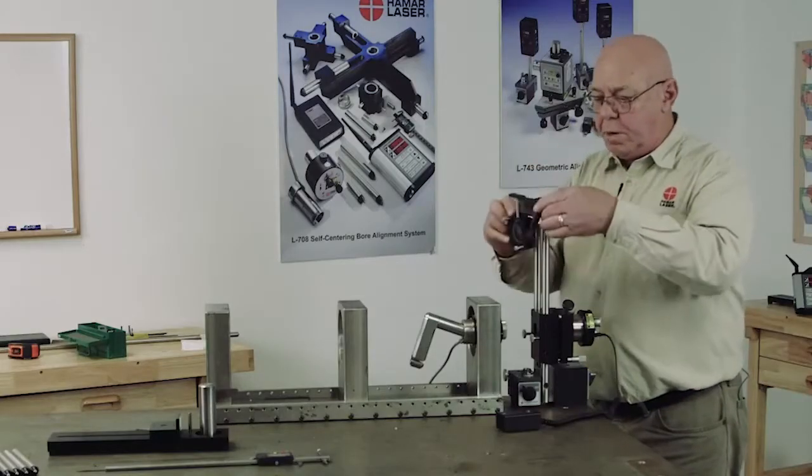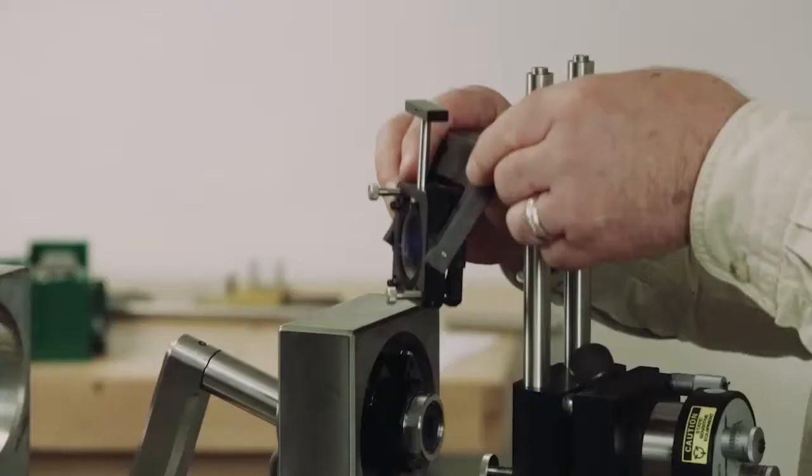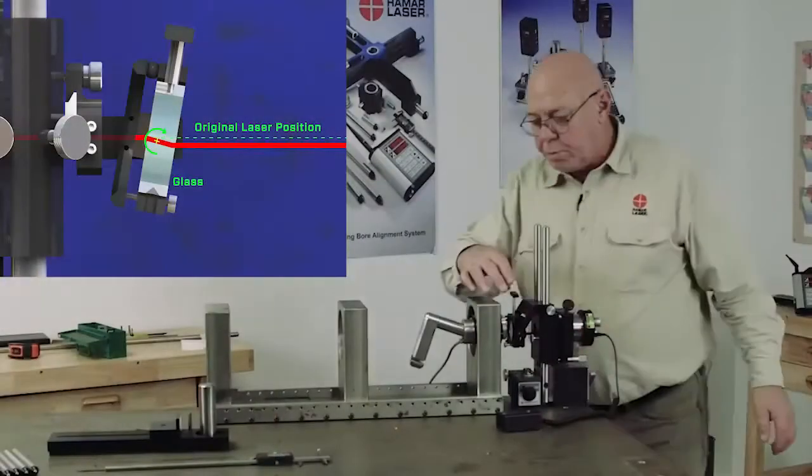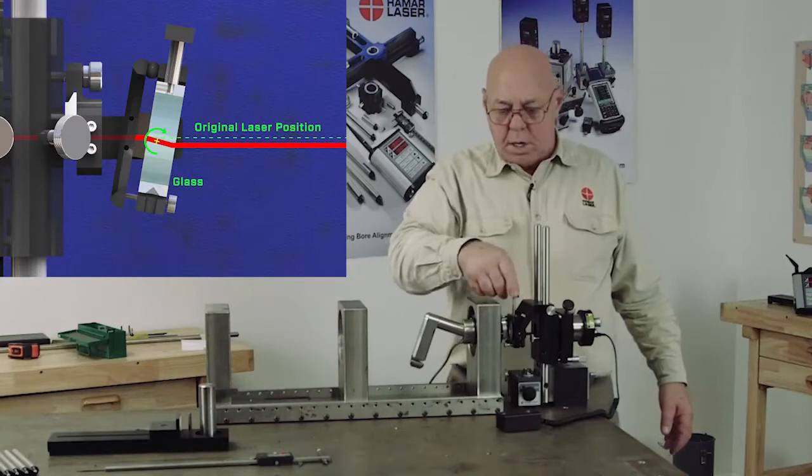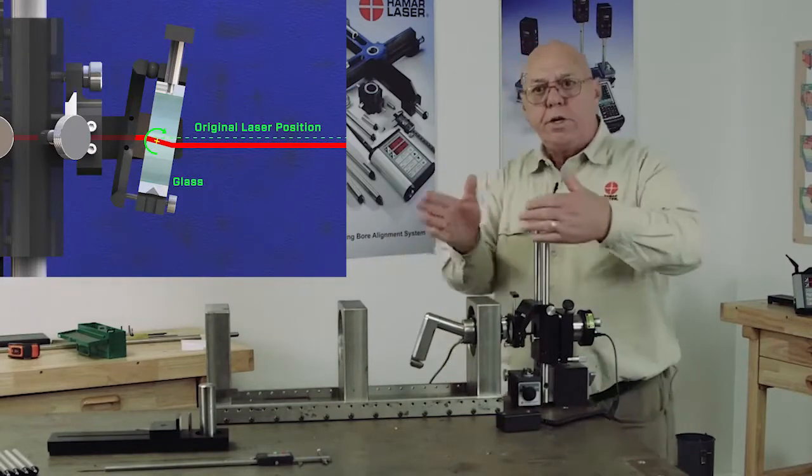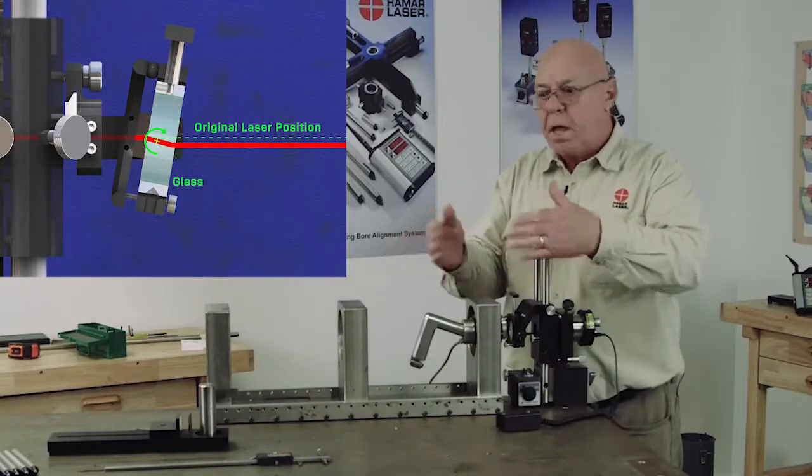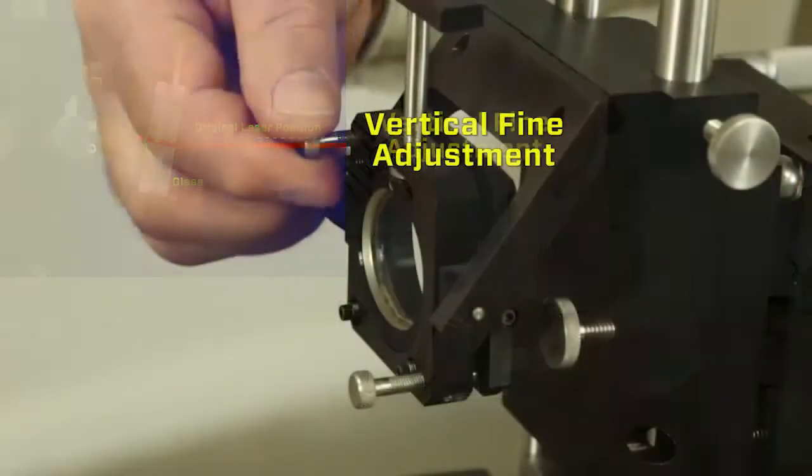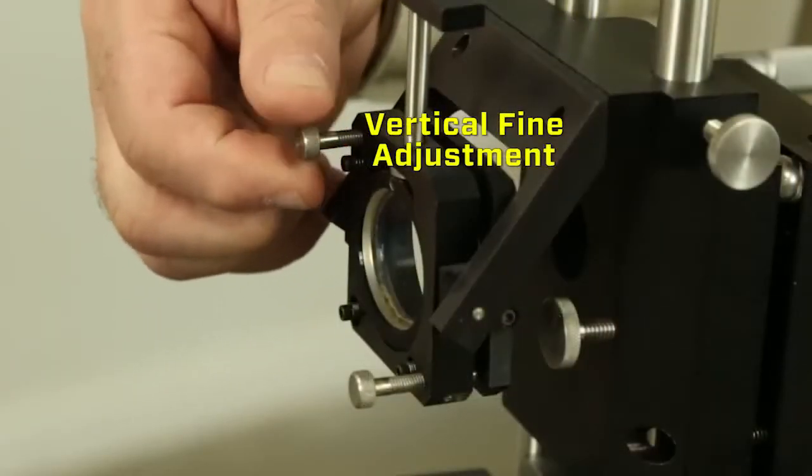Now I'm going to put the beam translator on and fine-tune this. The beam translator has this handle on the top. If I turn this, I change my horizontal numbers. If I tip it one way or the other, I change my vertical numbers, and there's fine adjustments here.